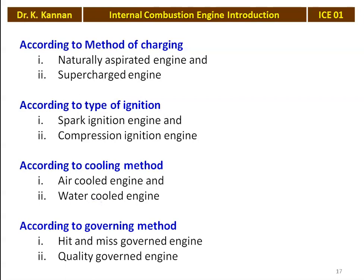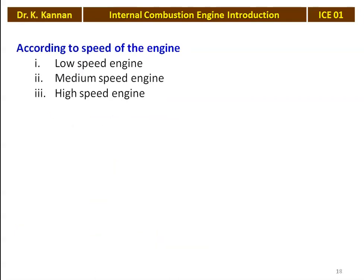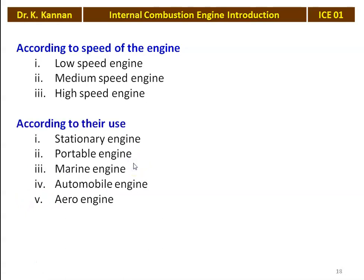According to the governing method: hit-and-miss governed engine or quality governing engine. According to the speed of the engine: low speed engine, medium speed engine, or high speed engine — race cars use high speed engines, while heavy duty vehicles running at 800–1500 RPM are low speed engines, and medium speed engines operate above 1000 RPM. According to the use: stationary engine (used for power generation), portable engine (for agricultural purposes or power generation), marine engine (used in ships), automobile engine (all types of automobiles), and aero engine (used in aeroplanes or aero vehicles).